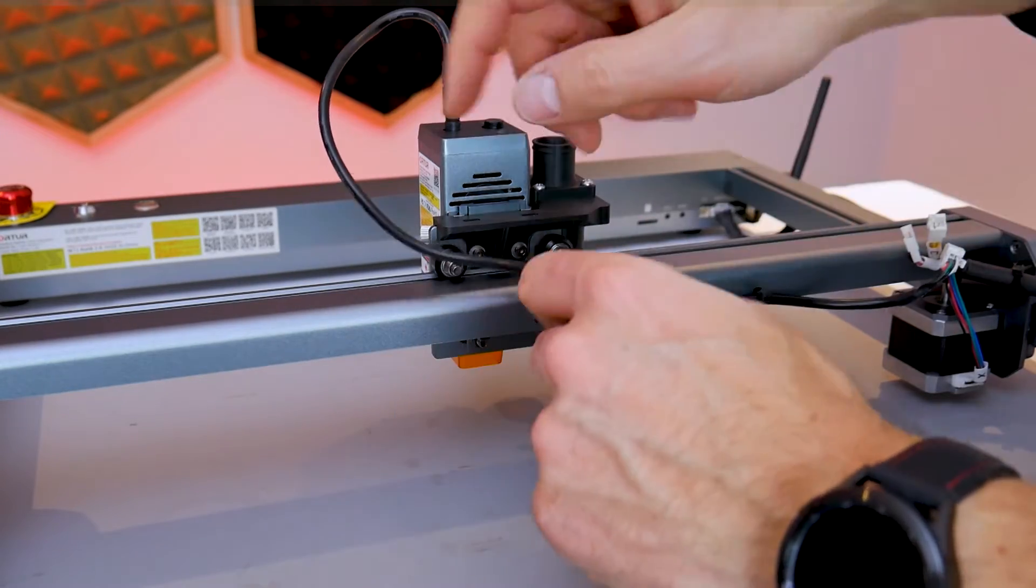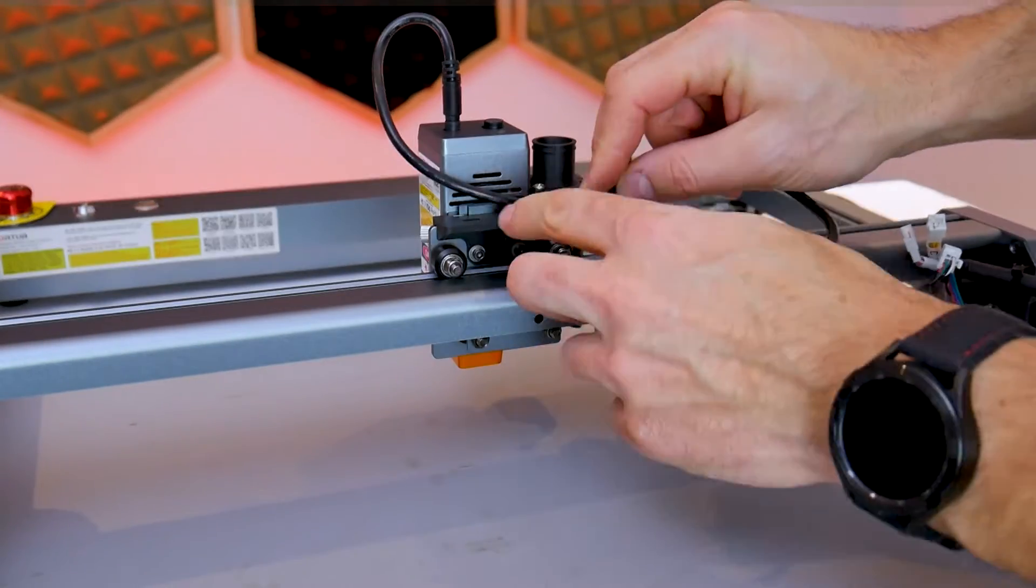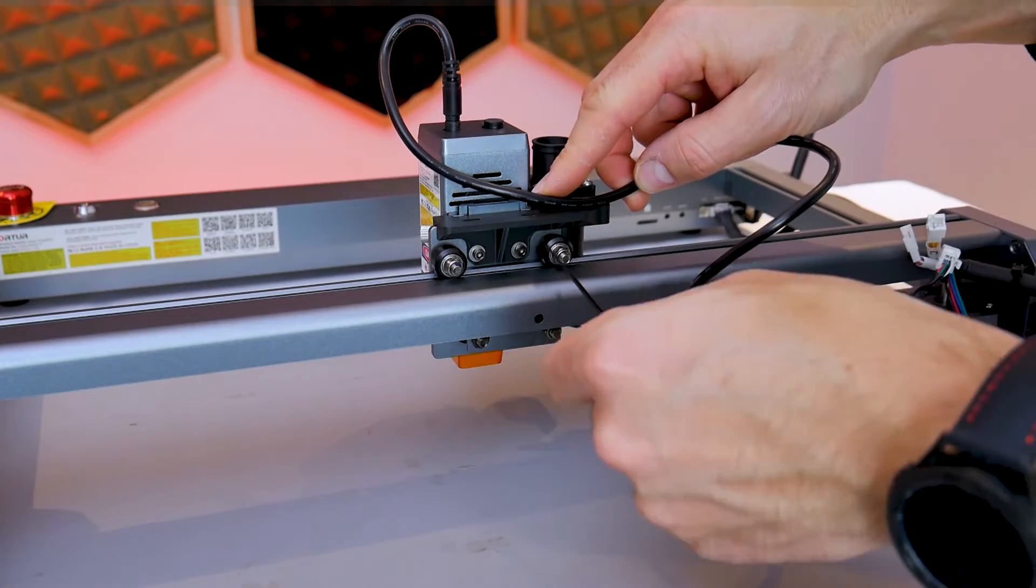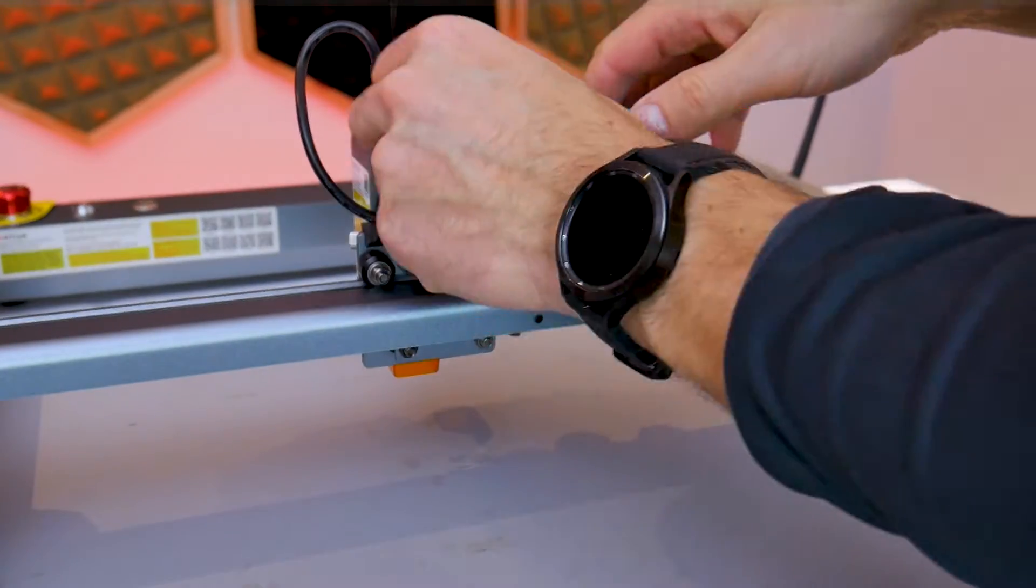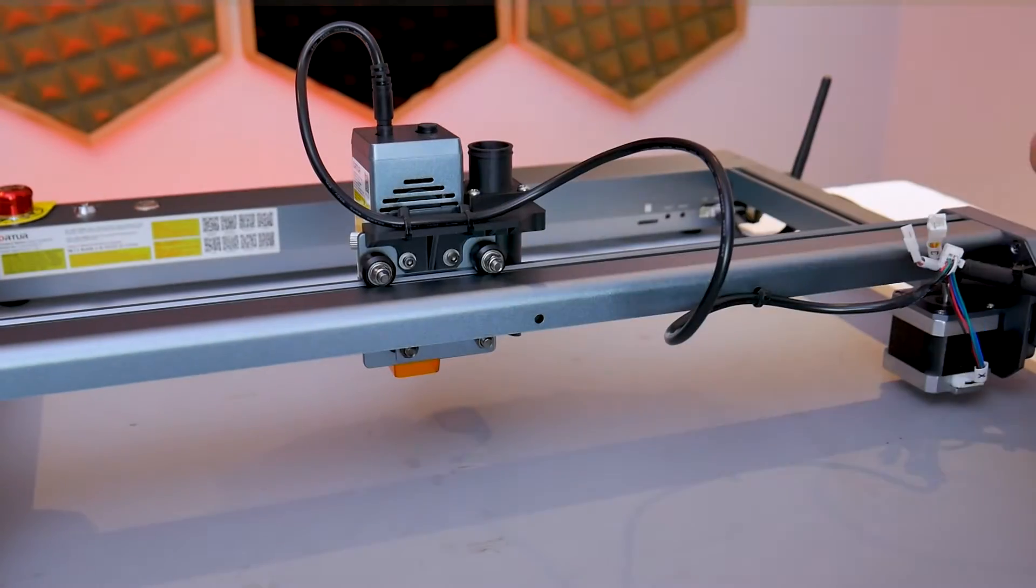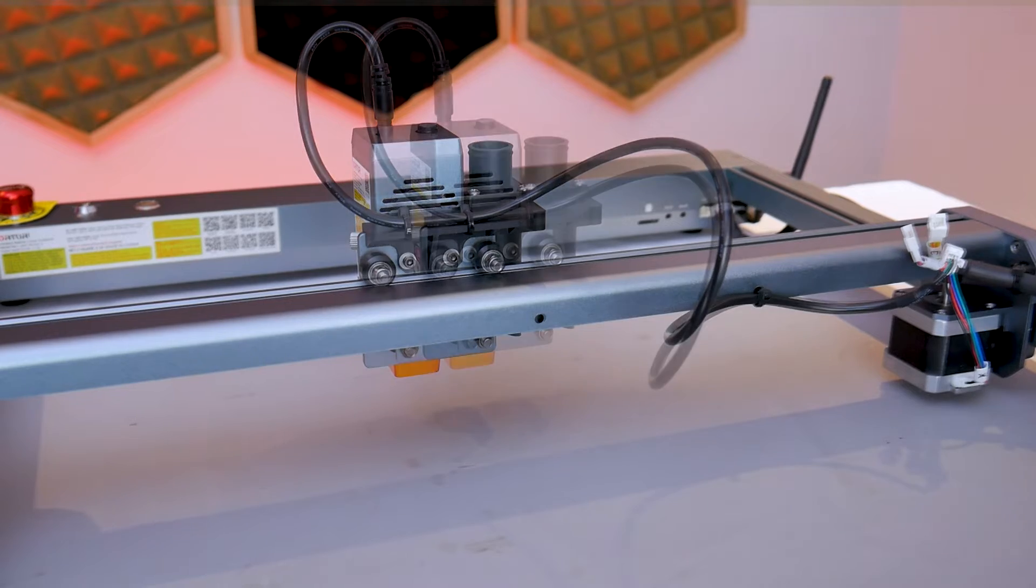Now you may notice that I've cut one of the zip ties that holds the wire going to the laser head, and that's because the new bracket contains a strain relief for the laser head wire harness. Grab two cable ties and secure the wire harness to the new bracket, and it should look something like this.